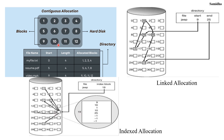In contiguous allocation, each file occupies a set of consecutive blocks on the disk. This method is easy to implement — we only need to remember the starting location and the length of the file. For example, the file resume.pdf starts from disk block number 5 with a length of 4 blocks, so blocks 5, 6, 7 and 8 are allocated for this file. The key points to remember are the starting disk block number and the length of the file.